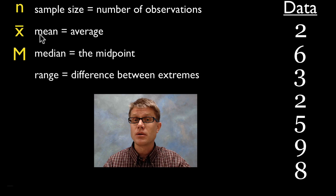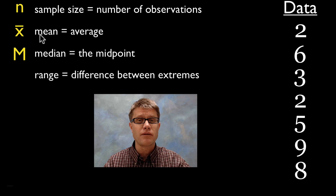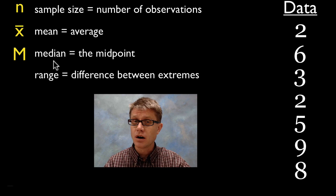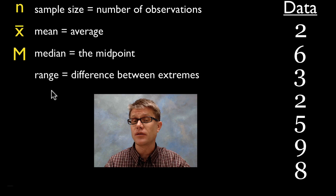Next we have what's called the X bar or the mean. The mean and the average are going to be the exact same thing. So if you know what an average is and how to figure it out, that's going to be the mean. Next is the median. Median is simply going to be the midpoint in between all of our data sets. And then finally we have a range.